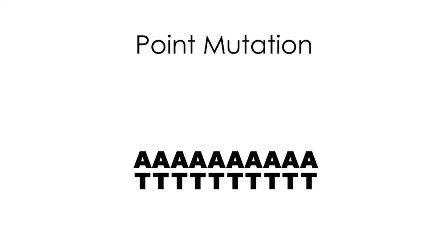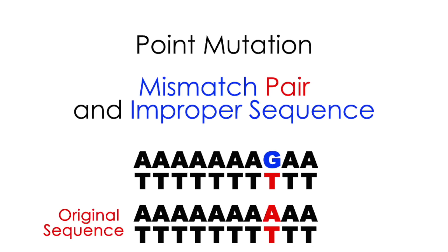A point mutation involves only one nucleotide. This is where one nucleotide on one strand of the DNA double helix is misreplicated. It will not cause a frameshift mutation; however, it will indeed cause a mismatched pair in the location of that mutation. There are three types of point mutations: silent mutations, missense mutations, and nonsense mutations.